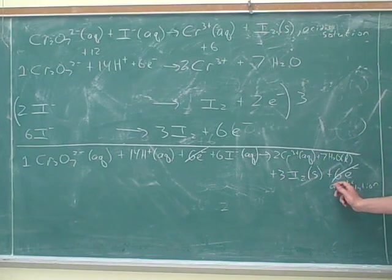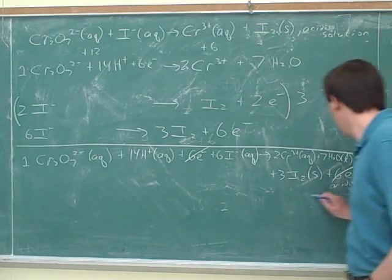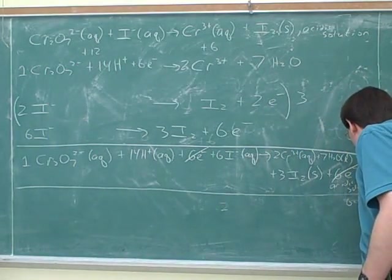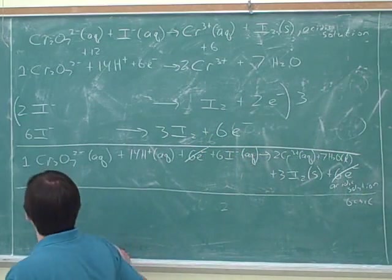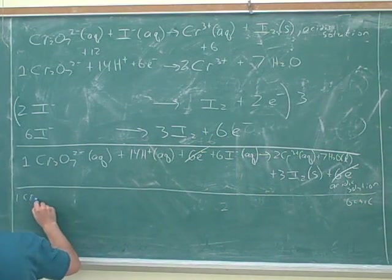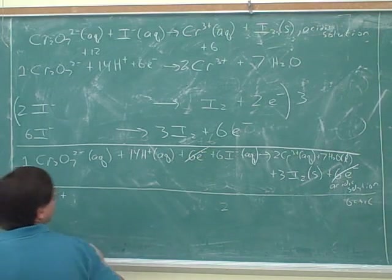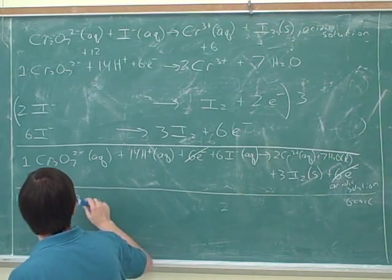So let's just say we've done it for acidic solution. Now here's the adjustment we would have to make if this was basic solution. So we can still use most of our work. We can still say that we have the one chromium and the six iodines.